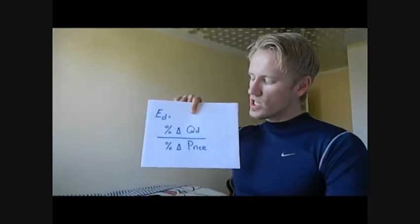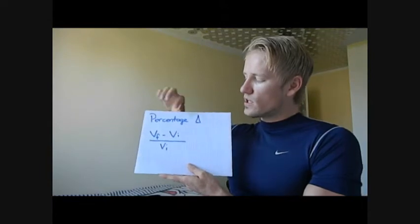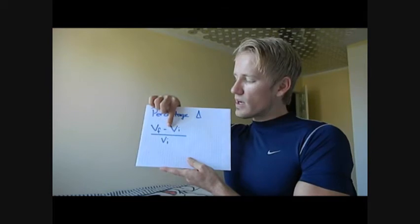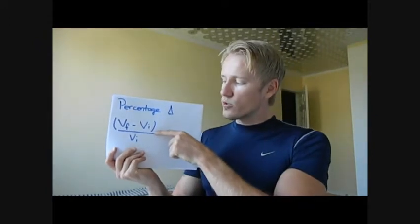What is the formula for elasticity of demand? Quite simply, it is the percentage change in quantity demanded divided by the percentage change in price. Here is the formula for percentage change: you have your final value minus your initial value divided by your initial value. Please do not get this mixed up when you are putting it into your calculator — there are brackets around the numerator in this.